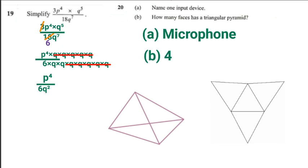That means it has got four faces. So the correct answer for 20b was four. Let's go to the next question.